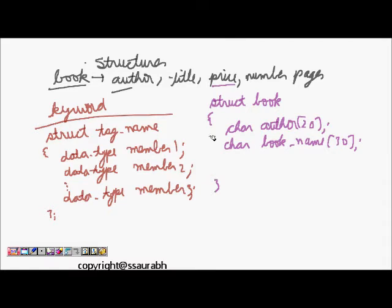Then price can be a float, so float price, and then number of pages, let's say it's int, so number of pages. So this defines our structure.